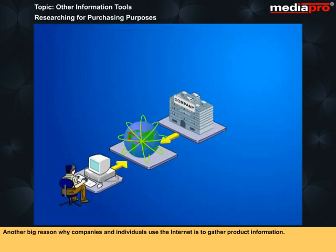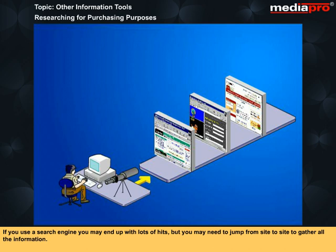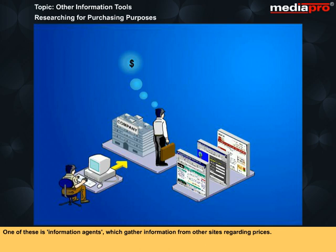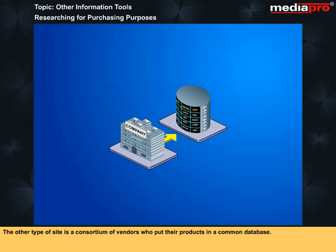Another big reason why companies and individuals use the Internet is to gather product information. By gathering all the necessary information, you can make a more informed purchasing decision. If you use a search engine, you may end up with lots of hits, but you may need to jump from site to site to gather all the information. There are two general trends on the Internet that are helping consumers and corporate purchasing agents deal with this situation. One of these is information agents which gather information from other sites regarding prices. For example, Bargain Finder is a service that will search sites on the Internet which sell CDs to find you the lowest price on any CD you specify. The other type of site is a consortium of vendors who put their products in a common database. This differs from information agents in that the listings are voluntary.